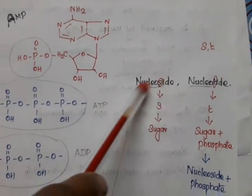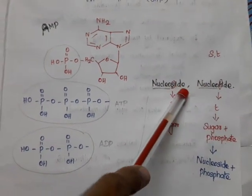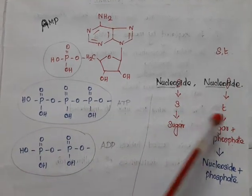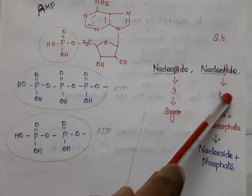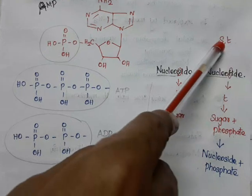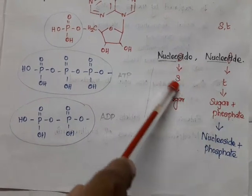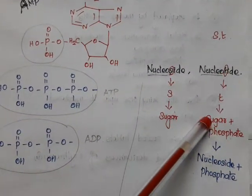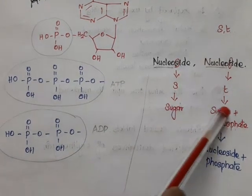In simple terms, the difference between nucleoside and nucleotide: what is common is 'nucleo.' Nucleoside has 'side' (S) and nucleotide has 'tide' (T). S means it has only sugar — no phosphate. T means it has something more after sugar, which is phosphate. So nucleoside has only sugar; nucleotide has sugar plus phosphate. In alphabetical order, T comes after S — after sugar, something more is added, which is phosphate.